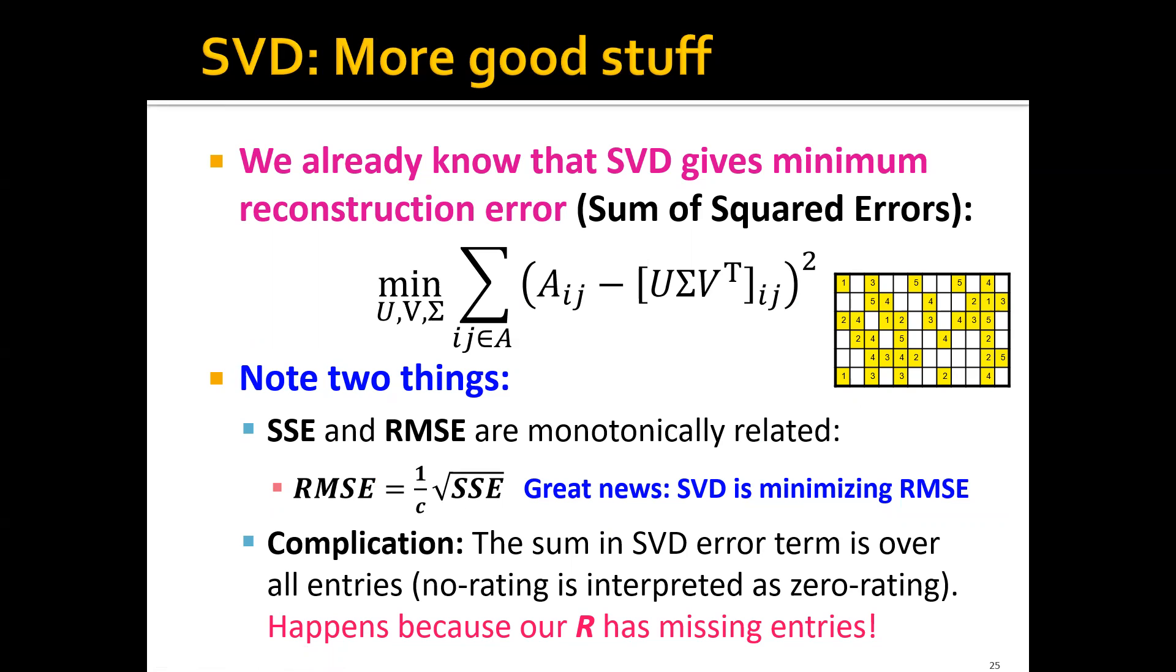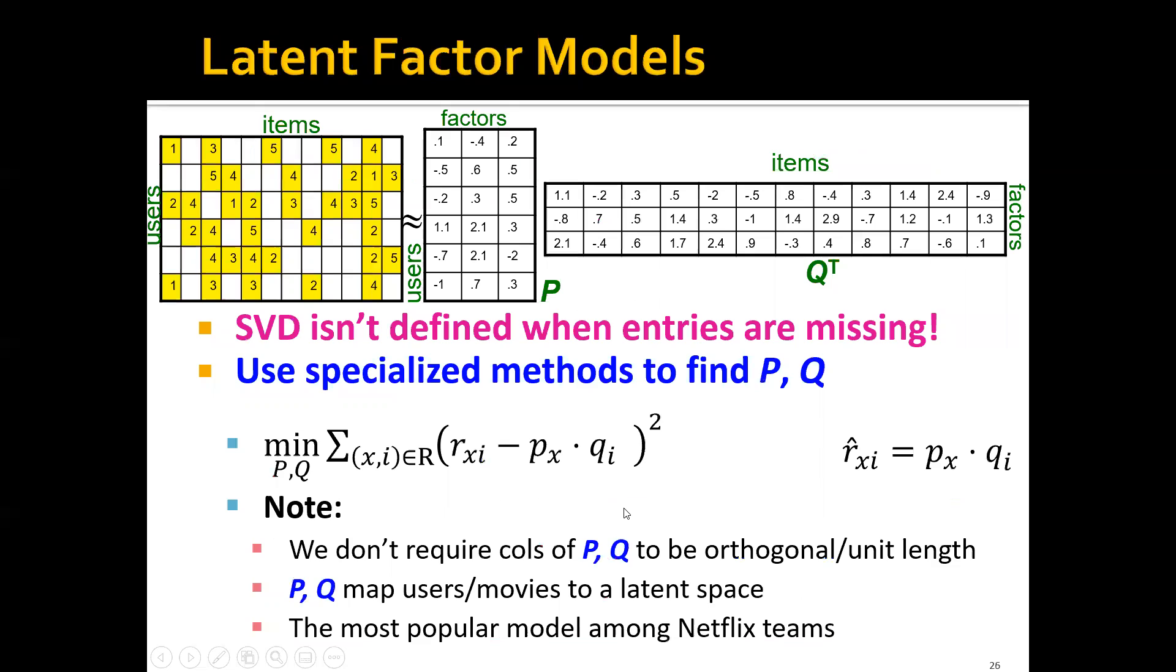One complication, though, is that the sum in the SVD error term is over all the entries. Basically, if we have a missing entry or no rating, it will be interpreted as a zero rating in the eyes of SVD. This is obviously not correct. When we're computing SVD, it will treat this entry as a zero rating, which means this user actually hates this movie, which is obviously not correct. This happens because our rating matrix has missing entries, and SVD isn't really defined when entries are missing.